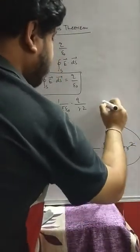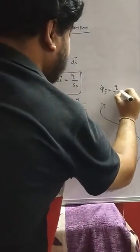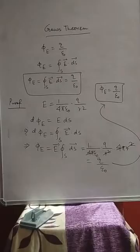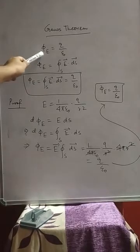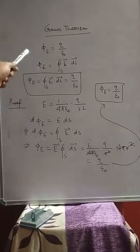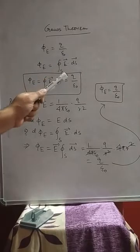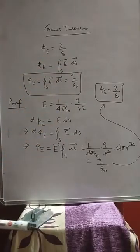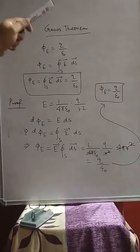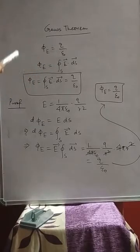This proves Gauss's theorem: the total electric flux enclosed by a closed surface is (1/ε₀) times the total charge enclosed. The statement φ_E = ∮ E·dS comes from the basic definition of electric flux; what Gauss proposed is that this equals q/ε₀. Combining the basic definition of flux with Gauss's proposal gives the full statement of Gauss's theorem.